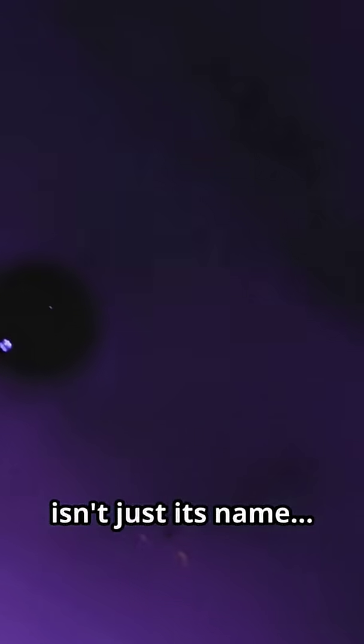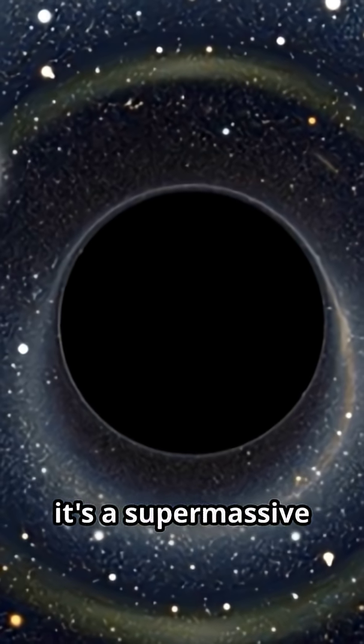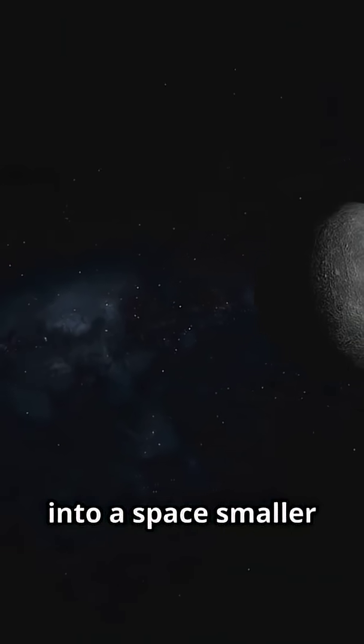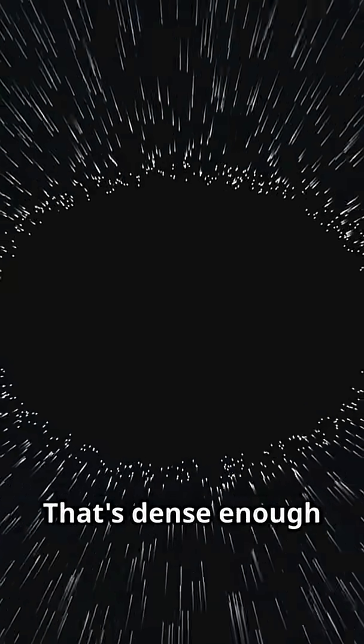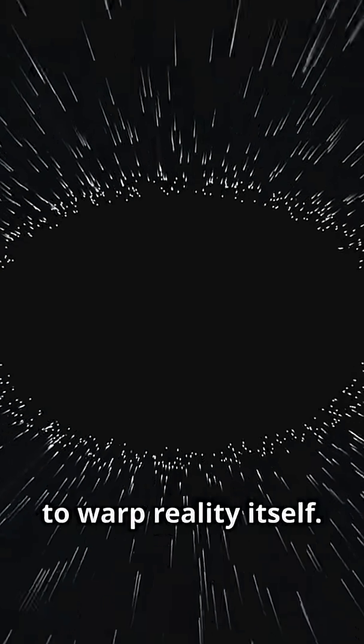But what makes it truly mind-bending isn't just its name. It's a supermassive black hole. Sgr A has a mass over four million times that of our Sun, yet it's squeezed into a space smaller than Mercury's orbit. That's dense enough to warp reality itself.